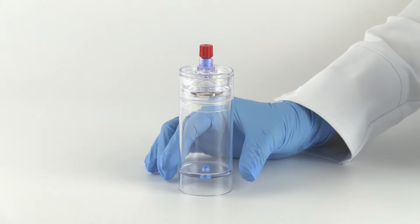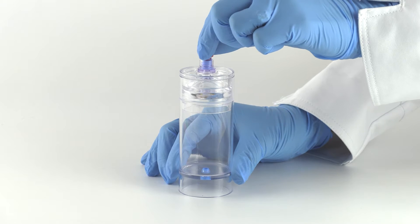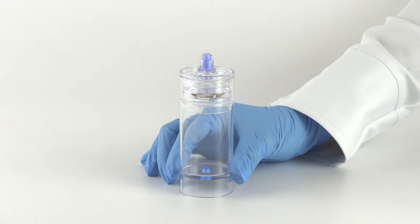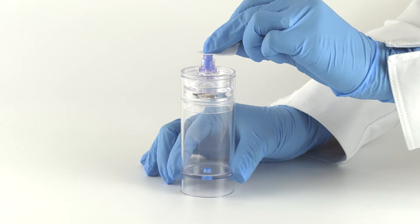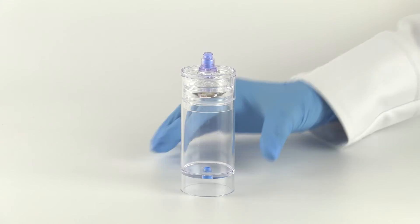To begin, remove the red cap from the needleless valve port of the separator device. Swab the port with sterile alcohol before and after accessing with a sterile syringe or cap.